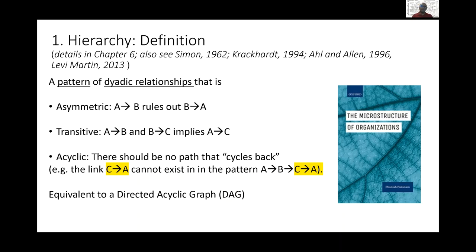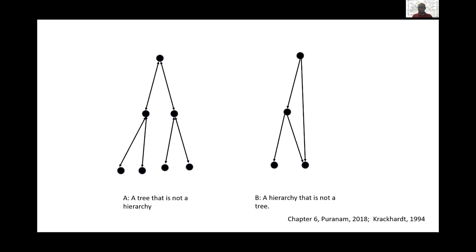A hierarchy can be equivalently represented as a directed acyclic graph. In management and organizations, we often have related constructs that are almost but not quite the same thing. The notion of a tree is intuitive — many reporting structures are presented this way — but a tree is not the same as a hierarchy. On the left of this picture is a tree that's not a hierarchy, because the arrows are symmetric, and asymmetry is a defining feature of a hierarchy. On the right is a hierarchy that's not a tree, because one individual has two parents. Matrix organizations where you have two bosses are indeed still hierarchies — nothing in the formal definition rules this out.